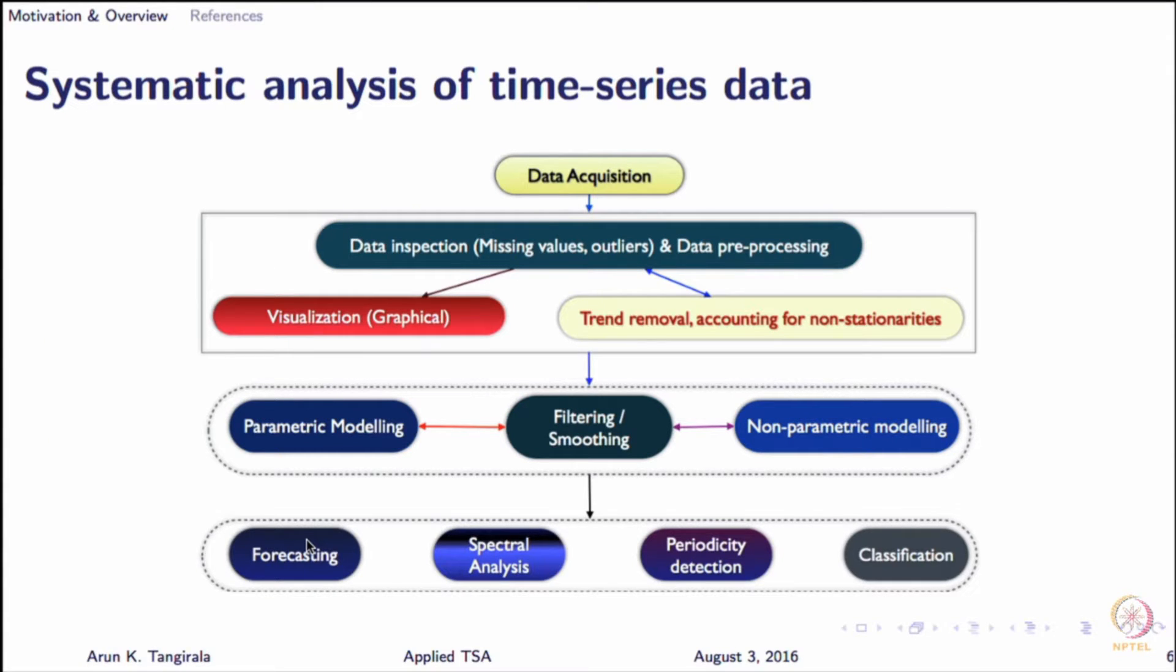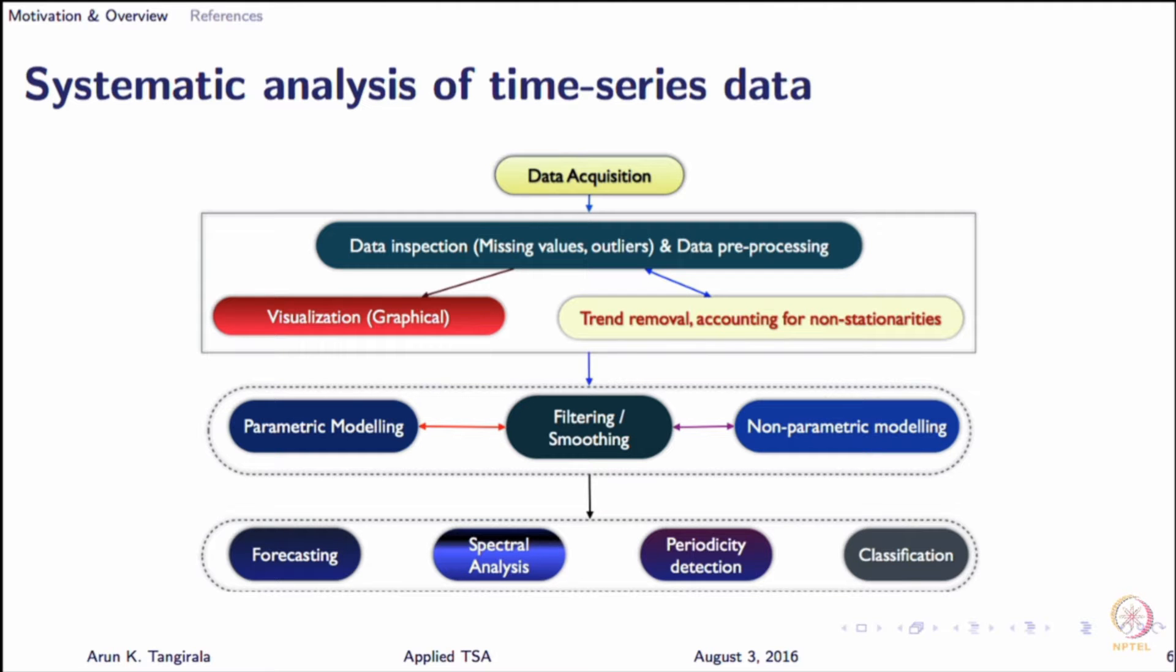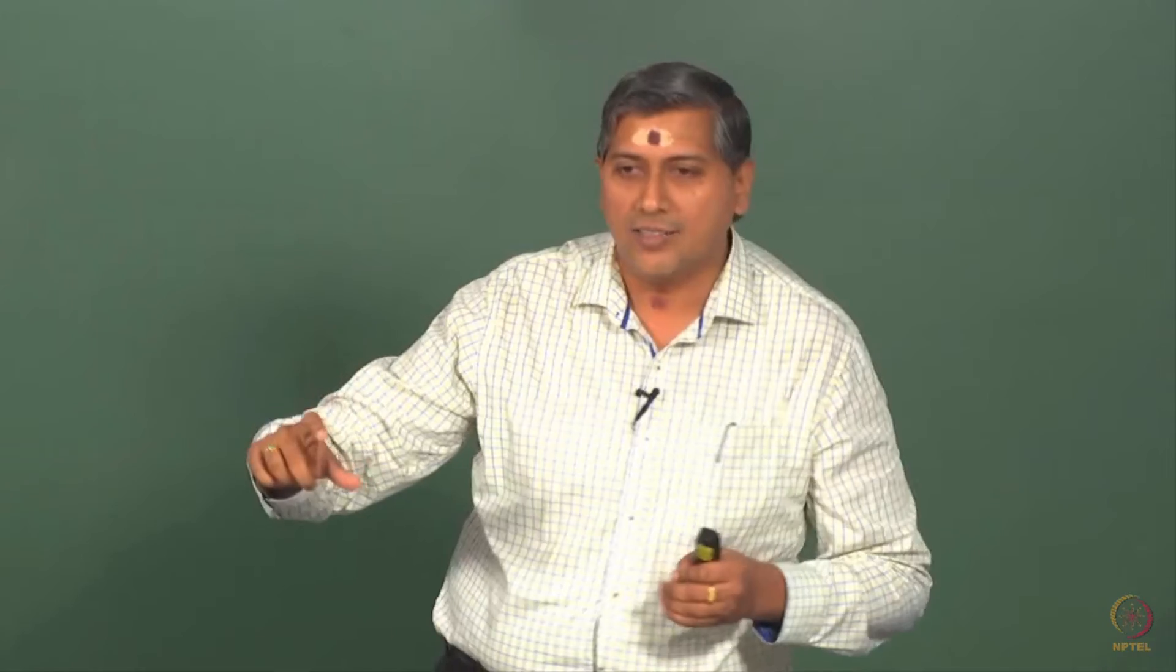It takes 80% of the total time to do 20% of the work. That is one version of 80-20 rule. 20% of the effort goes in actually doing 80% of the job. Now, why do I bring that up here? This data preprocessing, all the steps that you see from the acquisition to preparing the data for analysis—you can call this as preprocessing or prefiltering—it takes enormous amount of time.